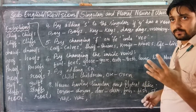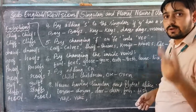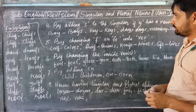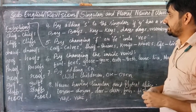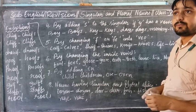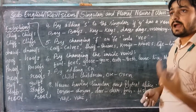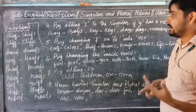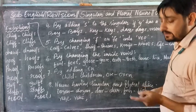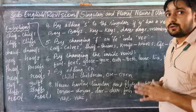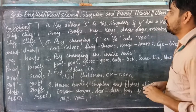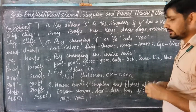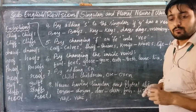I have given three points on how we can form singular into plural. In point three, when a noun ends with Y and there is a consonant just before it, we need to remove that Y and add -ies.